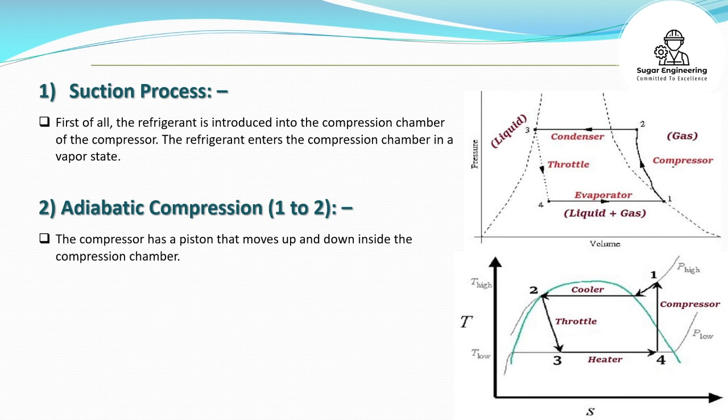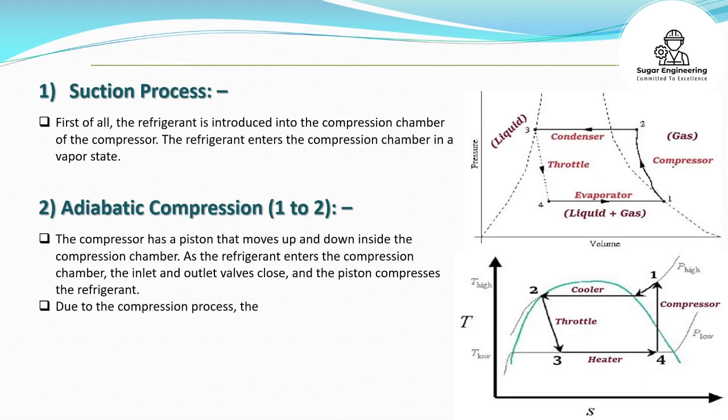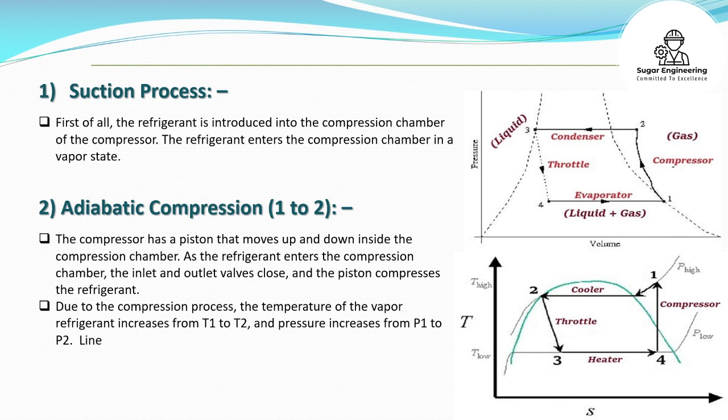2. Adiabatic Compression (1 to 2): The compressor has a piston that moves up and down inside the compression chamber. As the refrigerant enters the compression chamber, the inlet and outlet valves close, and the piston compresses the refrigerant.